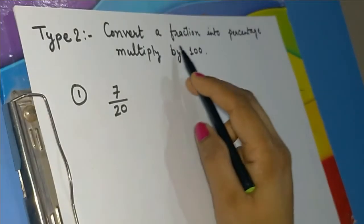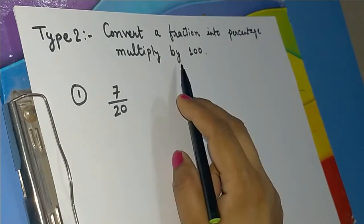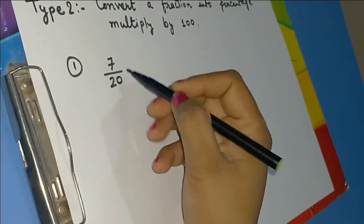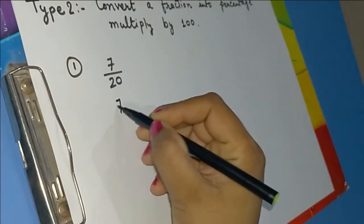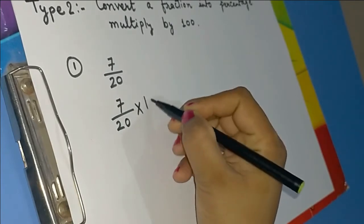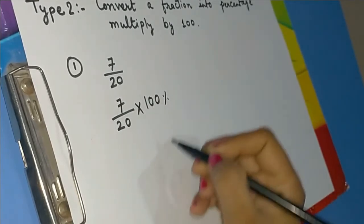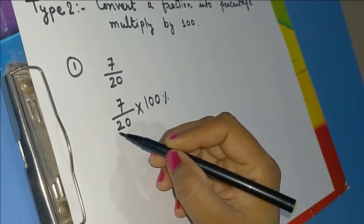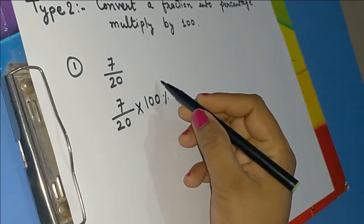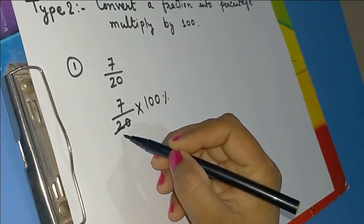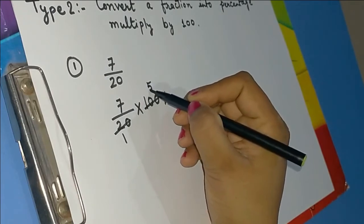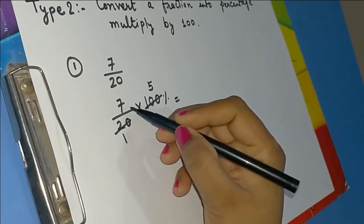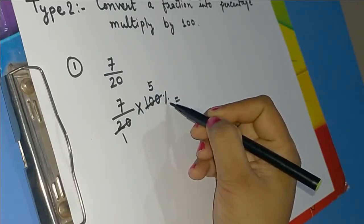In the second type of question, we convert fractions into percentage by multiplying by 100 percent. For example, 7/20: we multiply 7/20 by 100%. We can cancel 20 into 100 — since 20 × 5 = 100, we multiply 7 by 5 to get 35 percent.